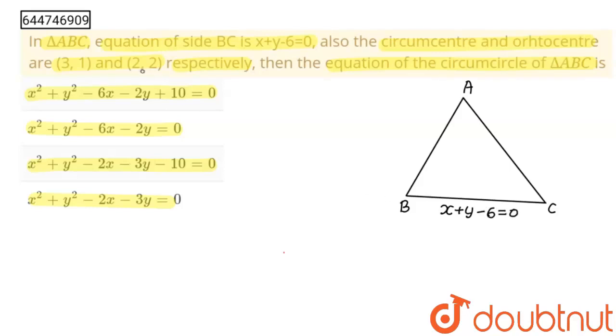And this is our circumcenter, so circumcenter is this, and this is our orthocenter somewhere. So we find equation of circumcircle. Here we know center is (3,1). The only thing we have to find is radius, either length CA, BC, or this is C1.